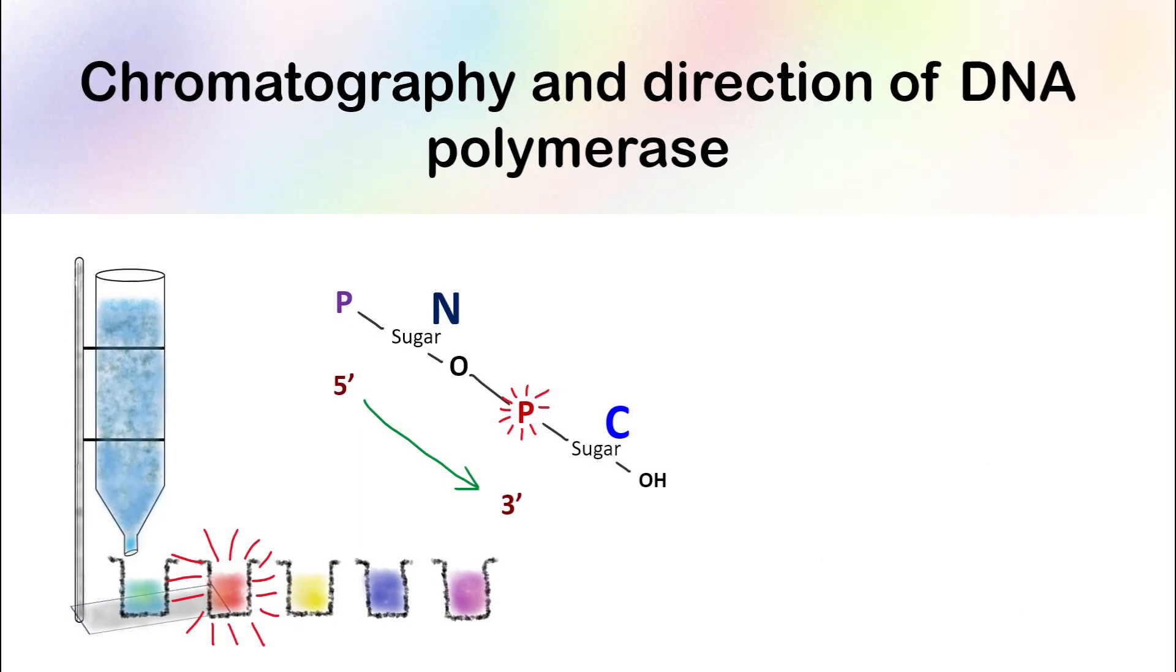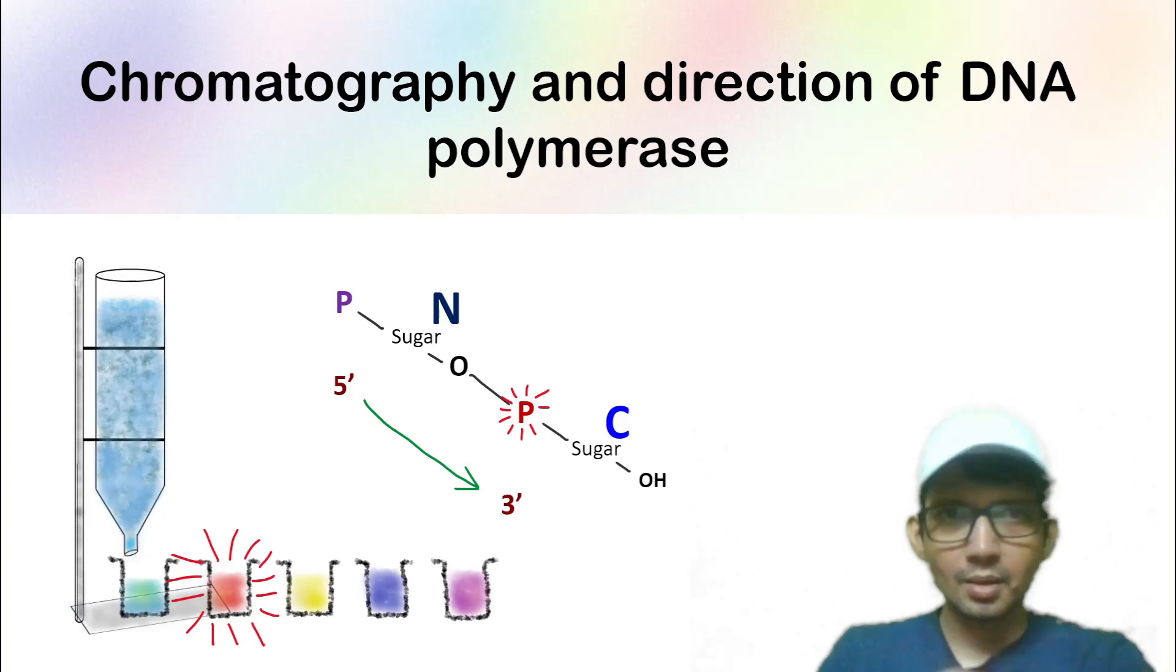Hello everyone, let's talk about chromatography and direction of DNA polymerase. The DNA polymerase moves from 5' to 3' direction, but have you ever wondered how this discovery was made? Well, it was the Nobel Prize winner Arthur Kornberg.